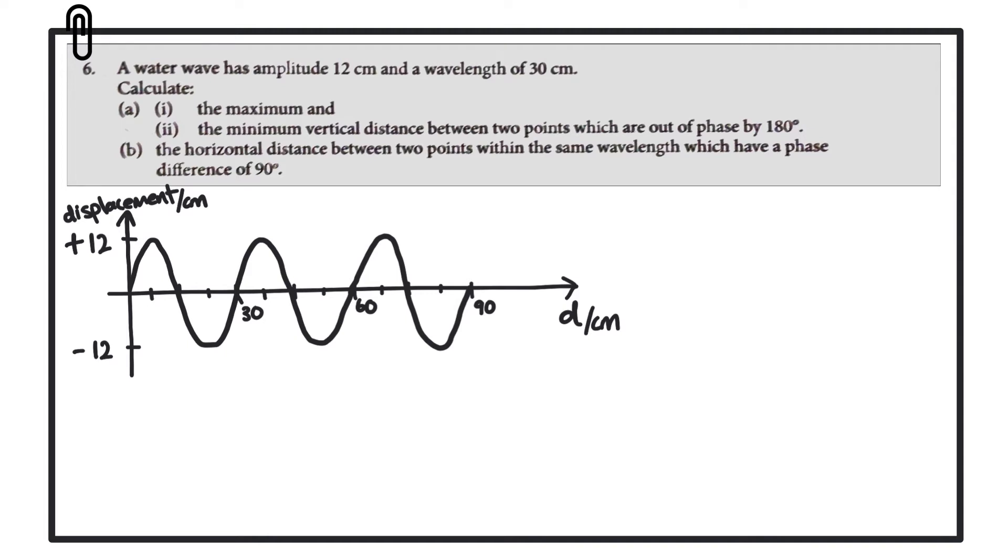We want to figure out what is the maximum and minimum vertical distance between two points which are out of phase by 180 degrees. 180 degrees is the same as half a wavelength, and that's if we consider one full wavelength to be one full cycle which is 360 degrees, then 180 is half of that so it's half a wavelength.